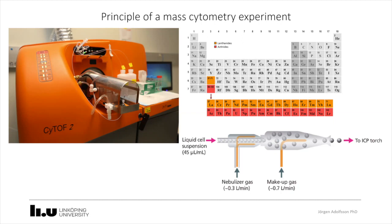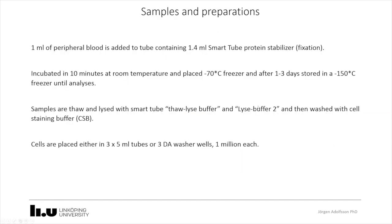One way to address this is to increase the number of cells retained during washing. This is what the laminar wash technology addresses. Mass cytometry is very good when you want to look at many parameters, and intracellular stainings — which are often low — are easily detected in this system.